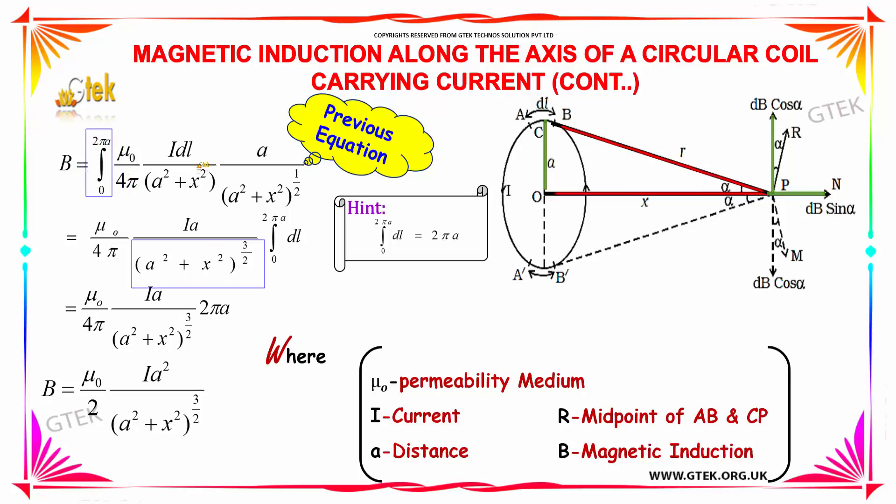Since the integration is involved with this dl, it is separated out here, which is equivalent to 2 pi A. So A and A here is A square and this one will get cancelled, 2 and pi and pi will get cancelled. So the total induction is mu0 by 2 into i A square divided by A square plus x square power 3 by 2.